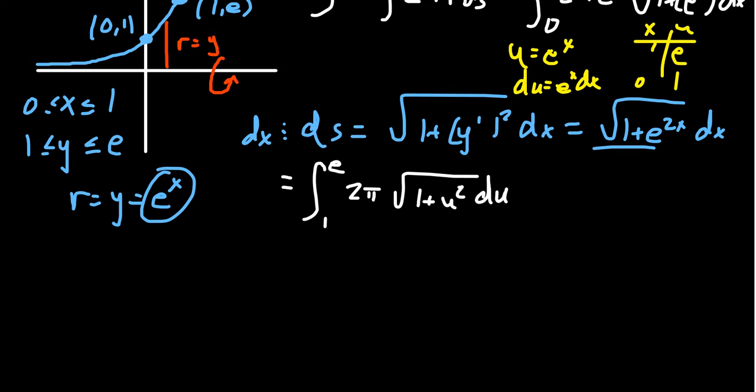We're going to have to do another substitution, this time a trigonometric substitution. Take u to equal tangent θ. Then du equals secant squared θ dθ. And the square root of 1 plus u squared will equal secant θ.